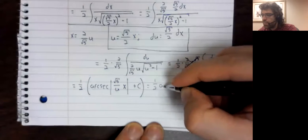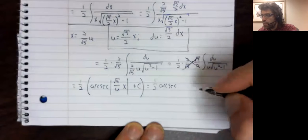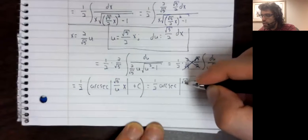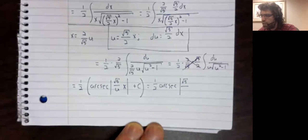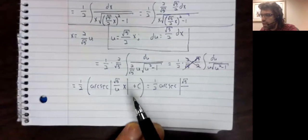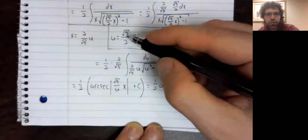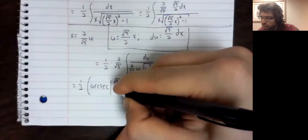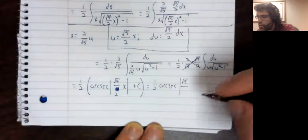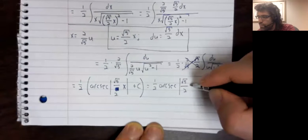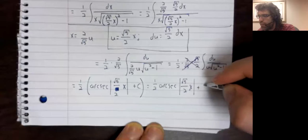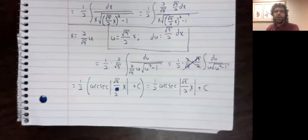Distributing. This one half, what did I do? The arc secant of the absolute value of u. I just made a kind of weird copying error. U is the square root of 5 divided by 2x. One half of an arbitrary constant is an arbitrary constant.